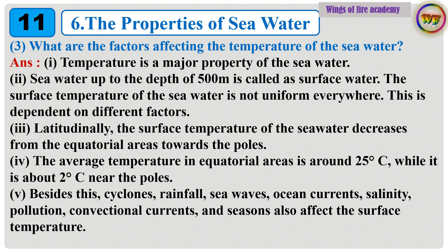Question 3: What are the factors affecting the temperature of the seawater? Answer: Temperature is a major property of seawater. Seawater up to the depth of 500 m is called surface water. The surface temperature of the seawater is not uniform everywhere; this is dependent on different factors. Latitudinally, the surface temperature of the seawater decreases from the equatorial areas towards the poles. The average temperature in equatorial areas is around 25 degrees Celsius while it is about 2 degrees Celsius near the poles. Besides this, cyclones, rainfall, sea waves, ocean currents, salinity, pollution, convectional currents, and seasons also affect the surface temperature.